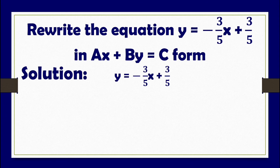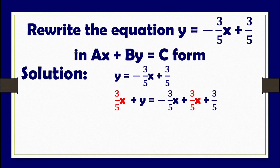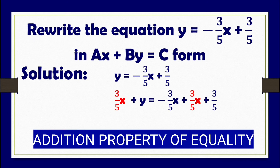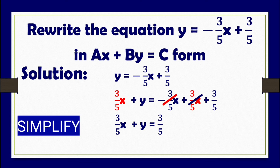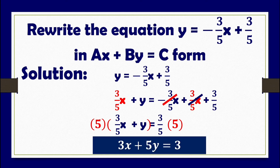For the solution, we get rid of negative three-fifths x on the right side by transposing it to the left using the addition property of equality — adding both sides by three-fifths x. The simplified equation becomes three-fifths x plus y equals three-fifths. Since the x coefficient is a fraction, we multiply both sides by 5. The final equation is 3x plus 5y equals 3, which is the general form.